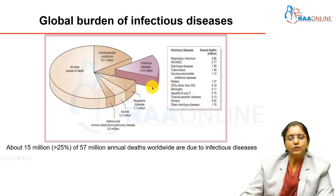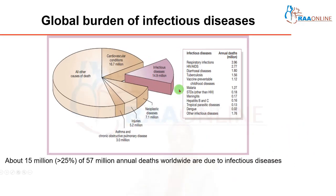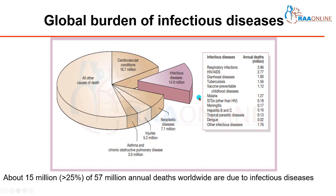Before going on to emerging infections, I want you to know about the global burden of infectious diseases. In the world, almost around 57 million deaths occur every year, and among these 57 million deaths, more than 25 percent — that is one-fourth, around 15 million — are due to infectious diseases. This highlights how important it is that we prevent and control infectious diseases and their spread.